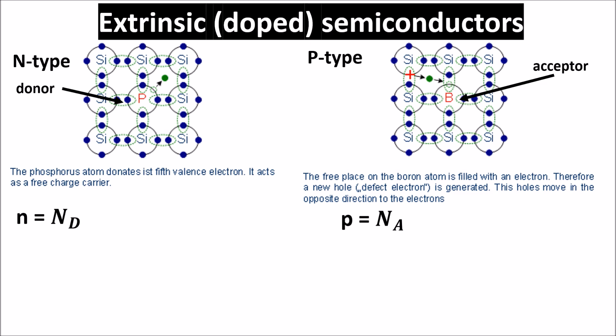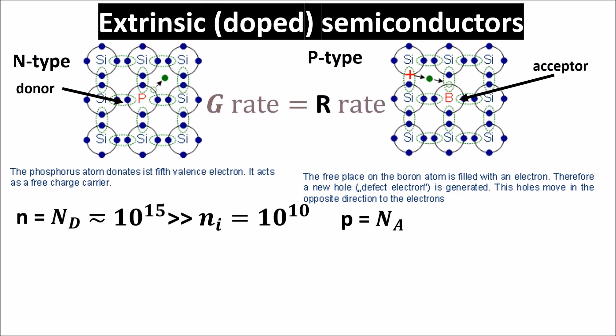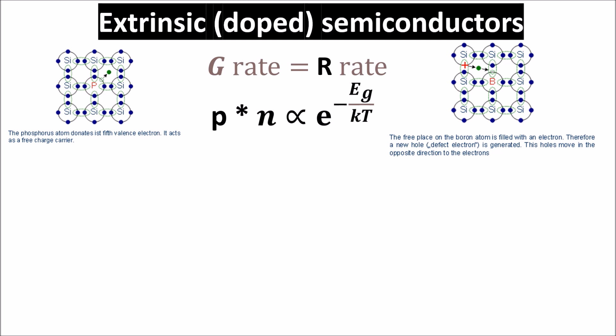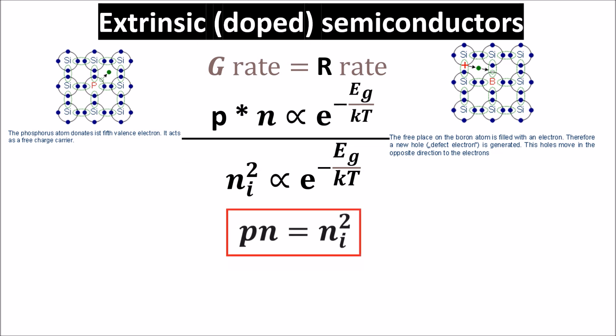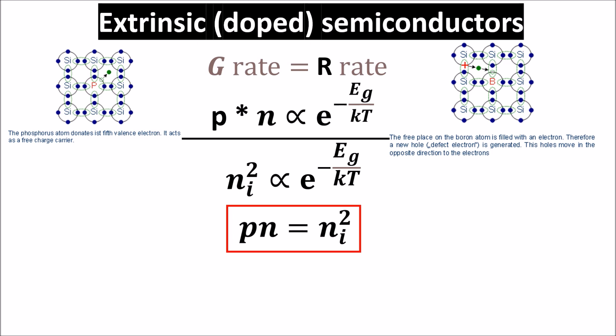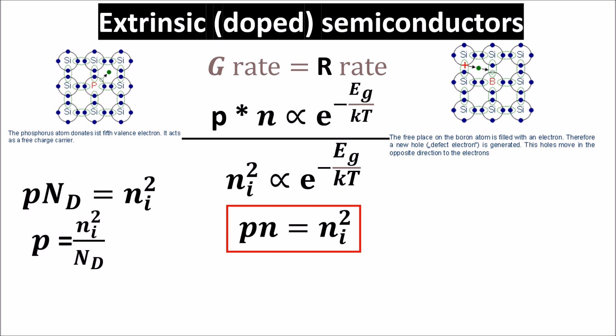This is because the dopant concentration is on the order of 10 to the power of 15, much more than carriers due to thermal energy. In an extrinsic material, also at thermal equilibrium, generation rate has to equal recombination rate. Recombination is proportional to the P-N product, and generation follows the same Boltzmann law as intrinsic silicon, because doping doesn't affect the energy gap, which remains 1.2 electron volts. So P times N has to be proportional to the exponential of the energy gap even in extrinsic semiconductors. Since in an intrinsic semiconductor Ni squared is proportional to the same quantity, dividing the two equations we get that P times N equals Ni squared. So in N-type, N equals ND, and we can calculate the minority carrier P. In P-type, P equals the acceptor number, so we can get the minority carrier N.